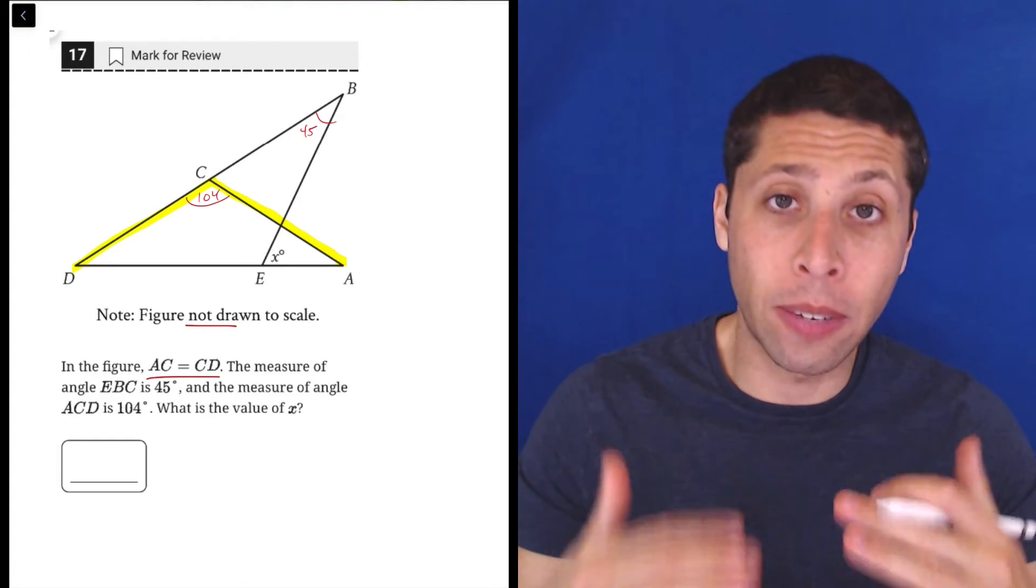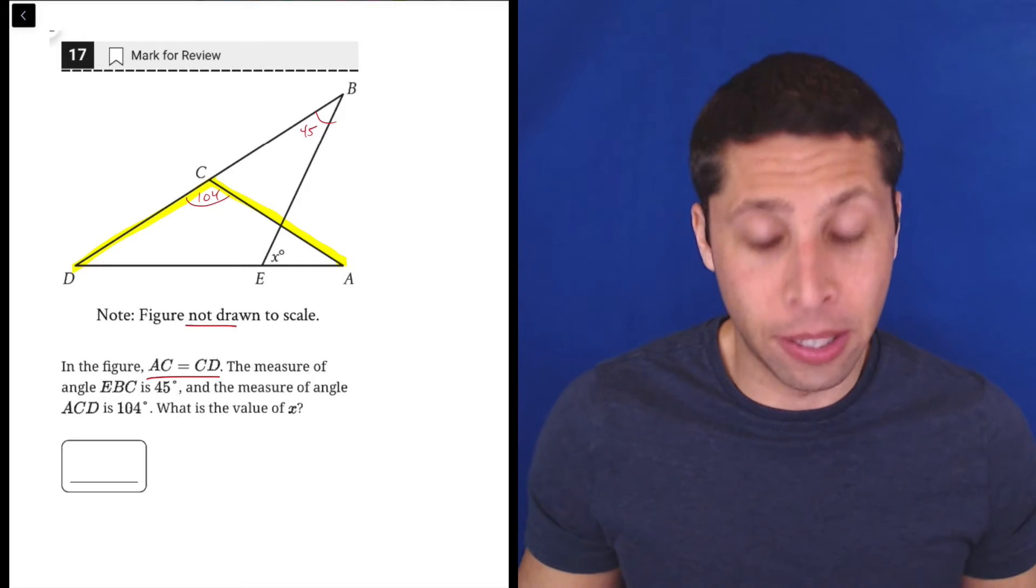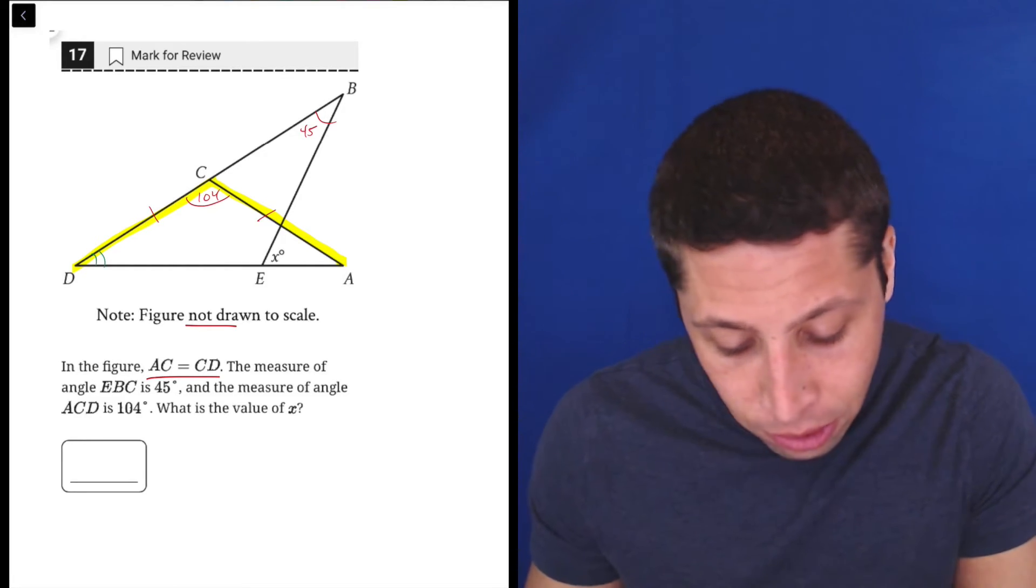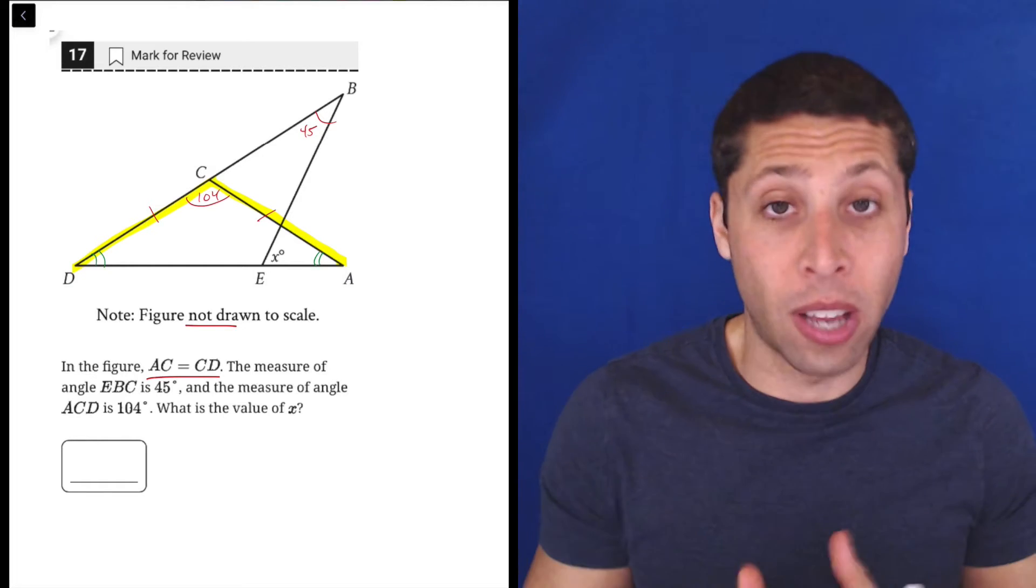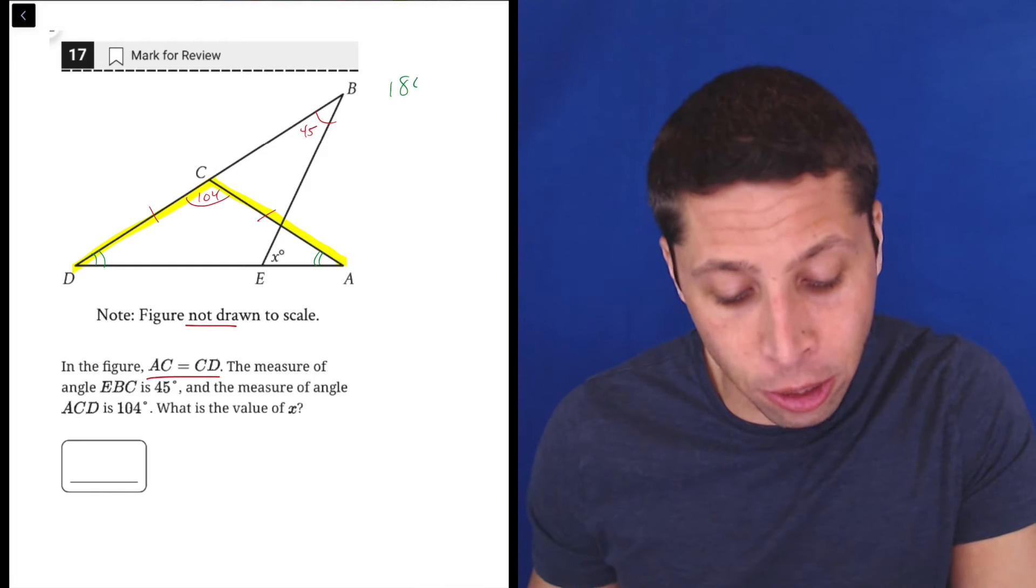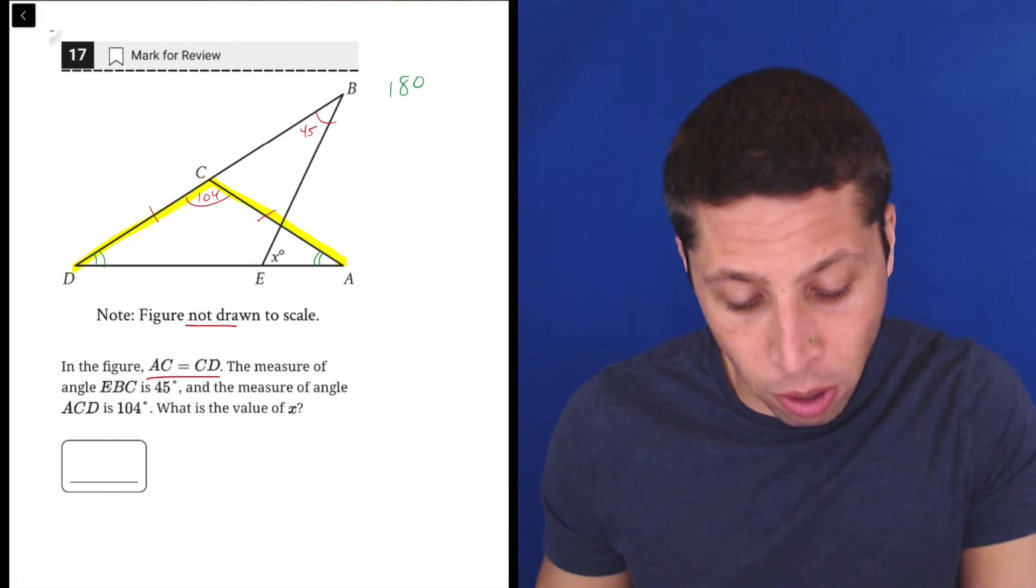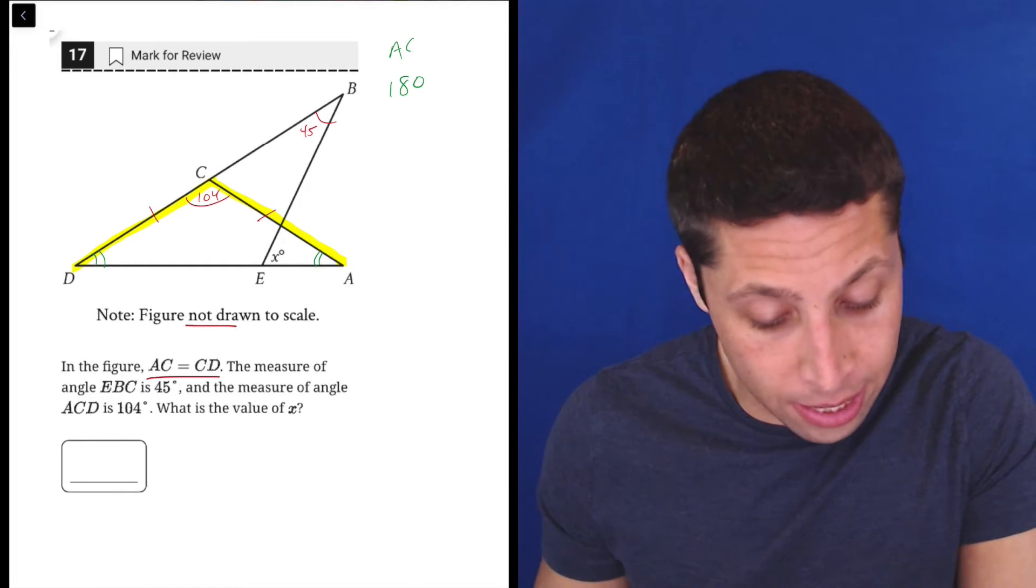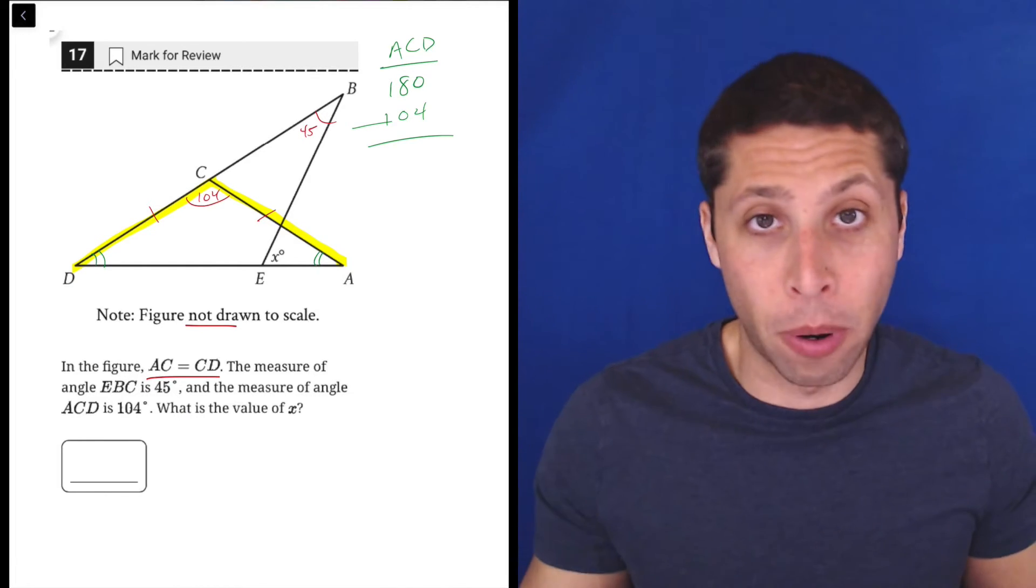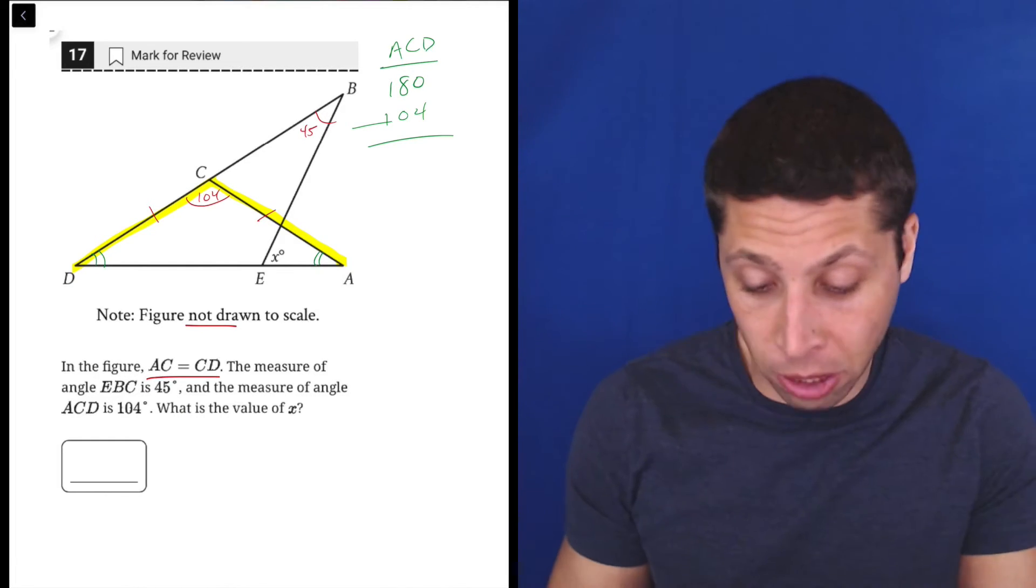This triangle that I've got these yellows in, that is an isosceles triangle, because now these two sides are the same, meaning then that the two angles opposite those sides are the same as well. So we have 180 degrees in every triangle. This triangle ACD has 104 already accounted for by the top angle. So let's get rid of those 104.